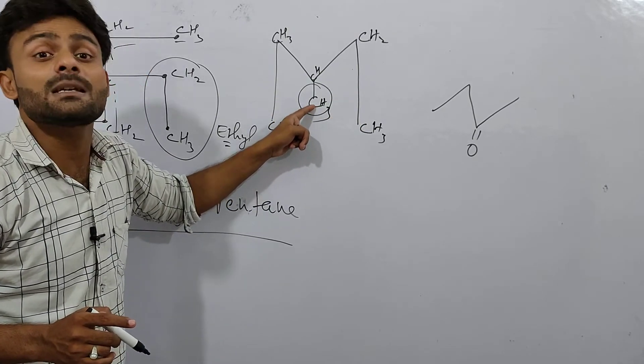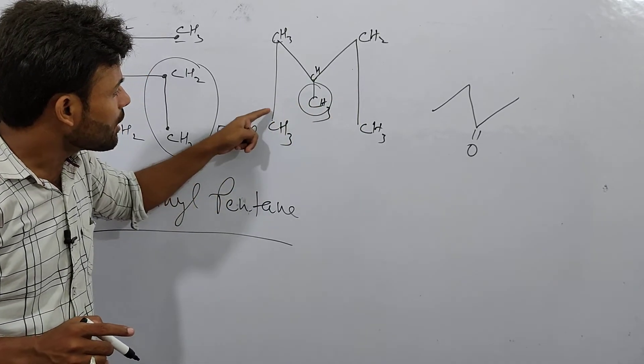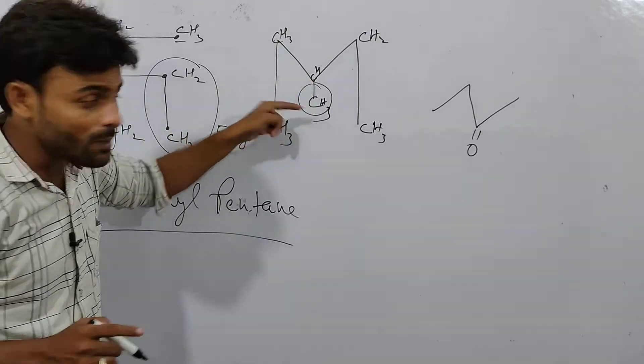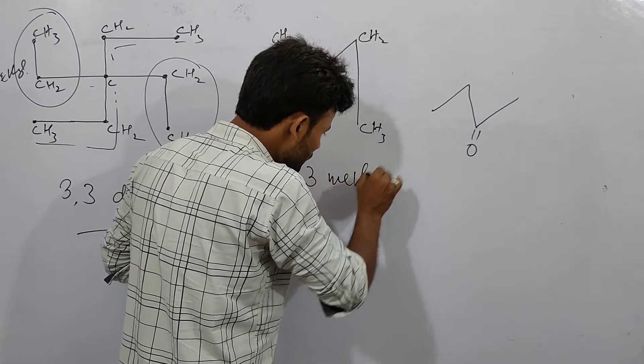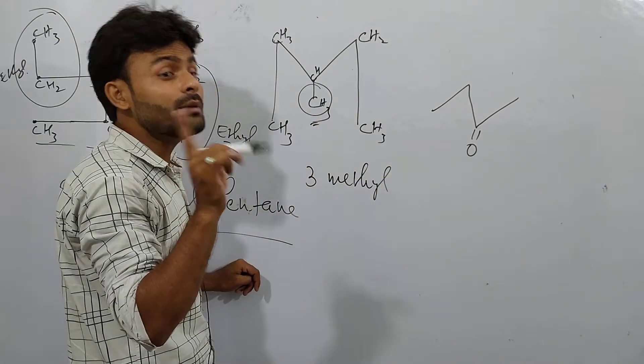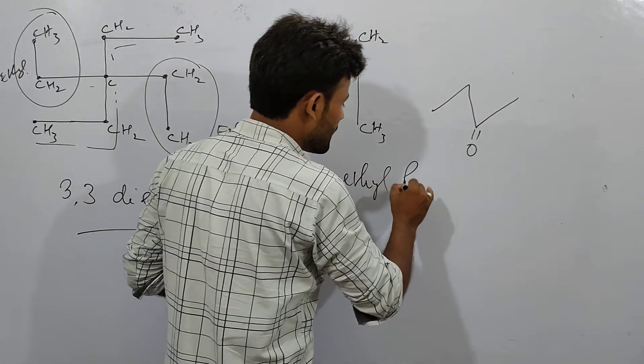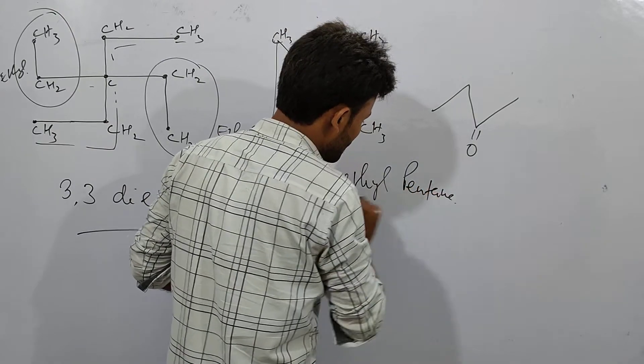You can see these are the methyl substituents. This is the third position. What is the name? 3-methyl, 3-methylpentane. Clear?